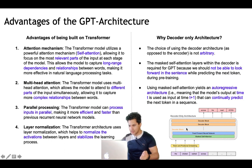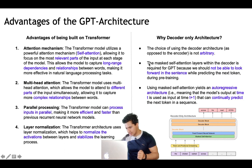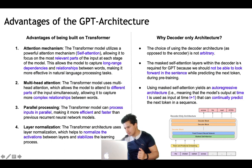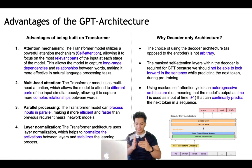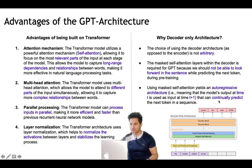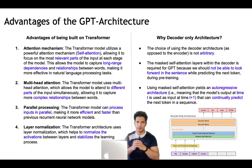Why does GPT only use the decoder part of the transformer architecture? This choice is not arbitrary — it is because of masked self-attention. The masked self-attention within the decoder prevents GPT from looking forward in the sentence while predicting the next token during pre-training. Since in pre-training the first X words are shown to predict the X+1 word, everything at position X+1 and beyond must be hidden. This is achieved through the masked attention layer. Using masked self-attention yields an autoregressive architecture where the model's output at time t is used as input at time t+1.